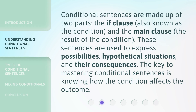Conditional sentences are made up of two parts: the if clause, also known as the condition, and the main clause — the result of the condition. These sentences are used to express possibilities, hypothetical situations, and their consequences. The key to mastering conditional sentences is knowing how the condition affects the outcome.